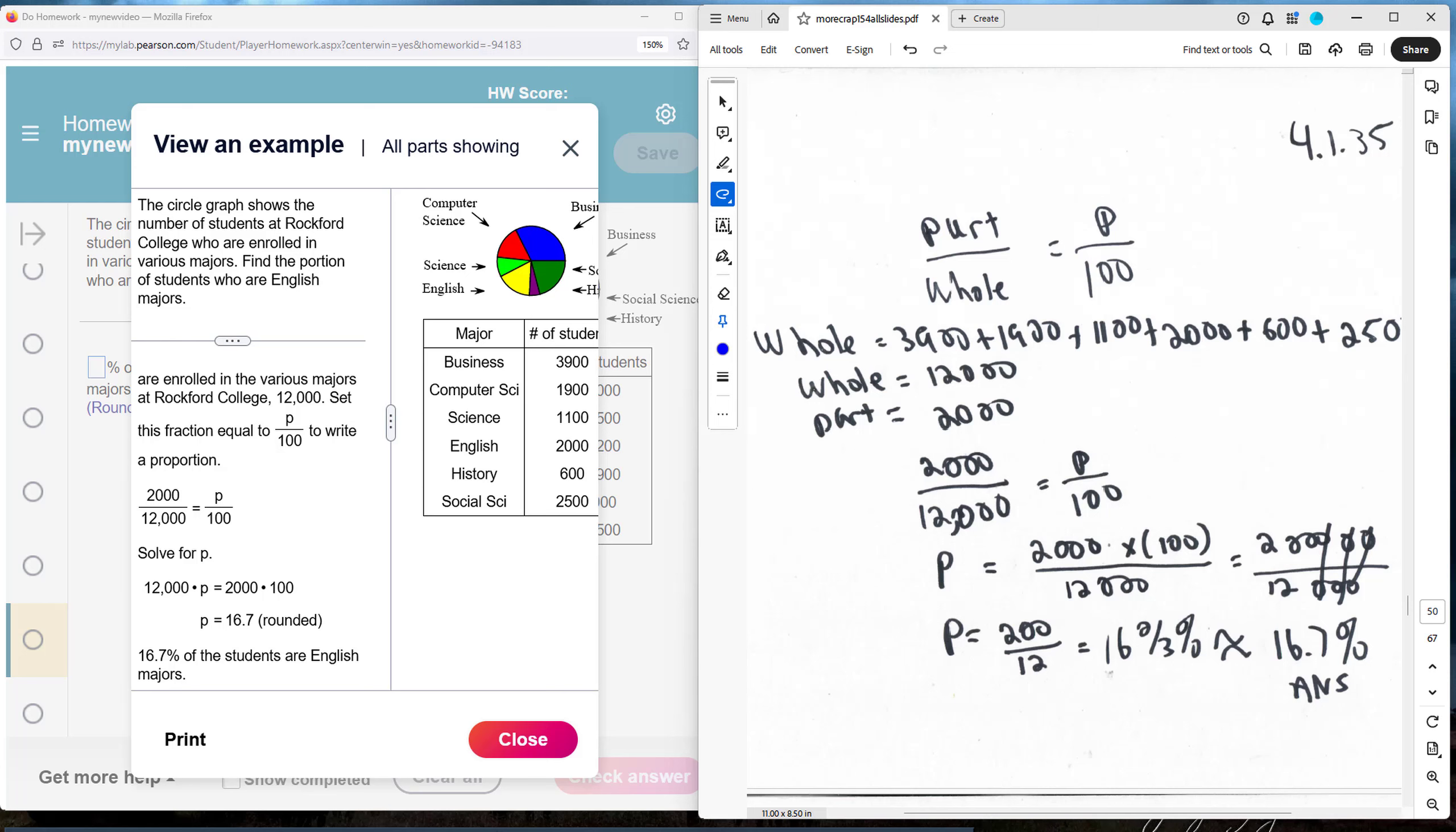This particular pie chart has actual counts. Each slice of the pie in the pie chart represents the amount of a particular type of major. From the legend, we can see the difference, how many are in each major.